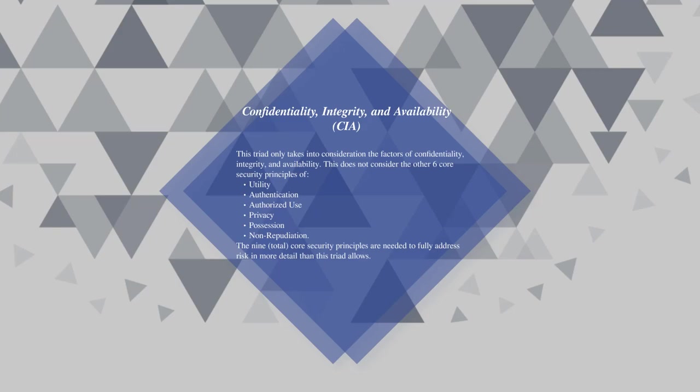The CIA triad does not consider six other core security principles, including utility, authentication, authorized use, privacy, possession, and non-repudiation. The nine total core security principles are needed to fully address risk in more detail than the triad allows.